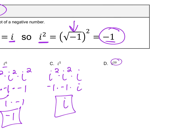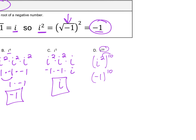For i to the 20th, start with i squared raised to the 10th power, because multiplying those gives i to the 20th. We know i squared is negative 1, so we raise negative 1 to the 10th power — that means multiplying negative 1 by itself 10 times, which gives a positive result. Any time you raise something to an even power, you always get a positive answer.